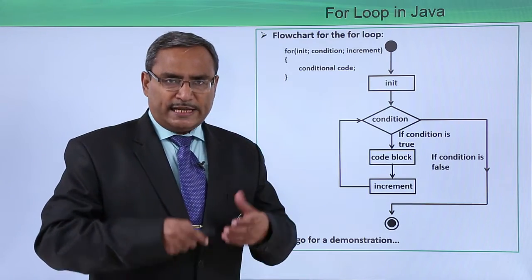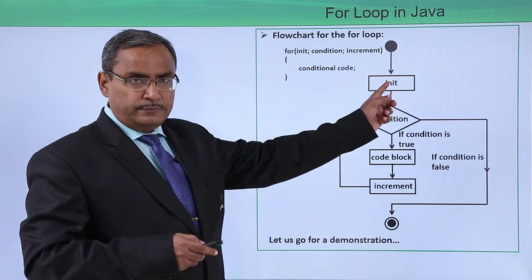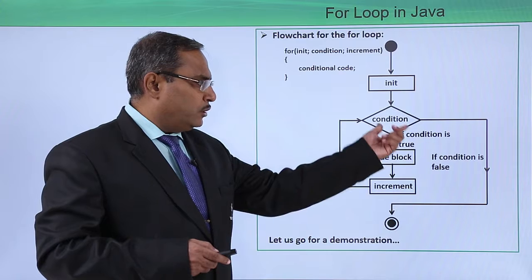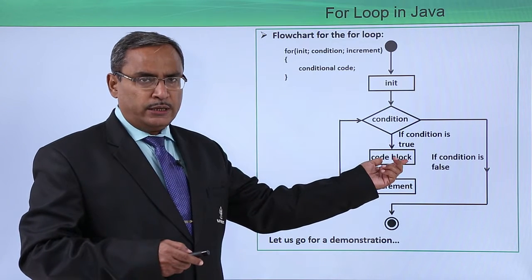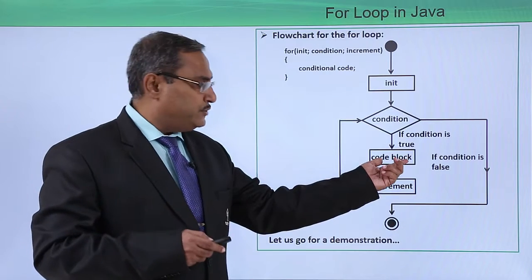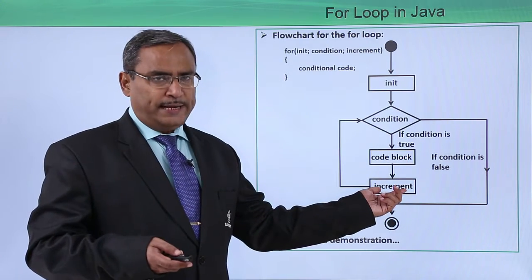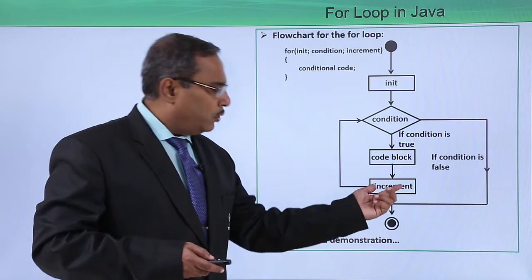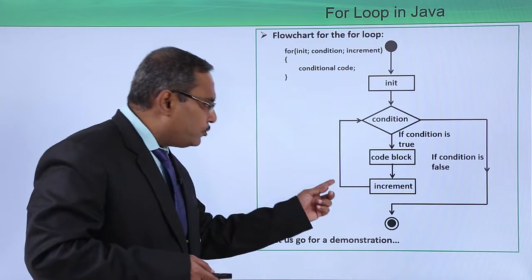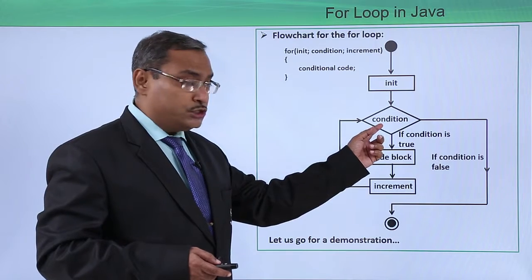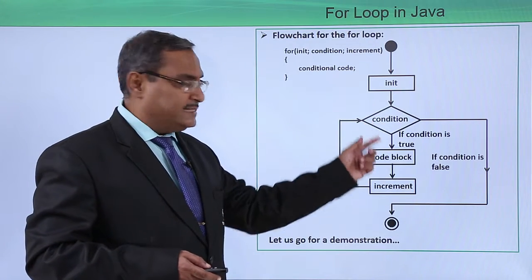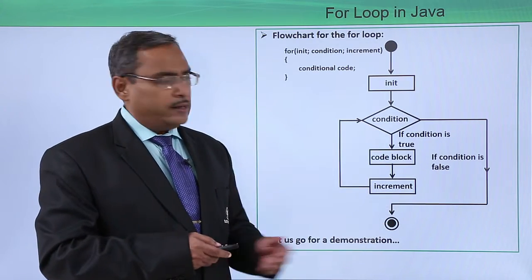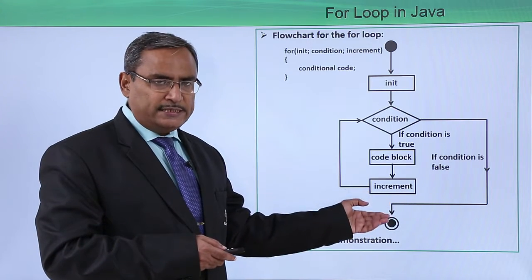Through this flowchart, let us explain more. Control comes in, this is our initialization code, then the condition is checked. When this condition is true, the code block gets executed — consisting of single or multiple statements. Then increment or decrement of the loop control variable takes place. Control comes back to the condition; when true, looping takes place again. But if the condition is false, it comes out and the program gets terminated after executing the next unexecuted instructions.